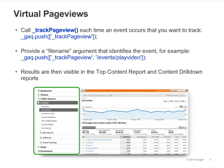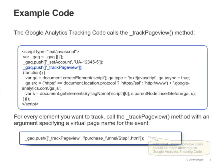You'll see these virtual page views alongside ordinary page views in the top content and content drill down reports. If you look at the Google Analytics tracking code, you'll notice that it calls trackPageview, which lets Google Analytics know that the browser has loaded a page. When you call trackPageview, however, you'll want to provide an argument that specifies a virtual page name for the event you're tracking.